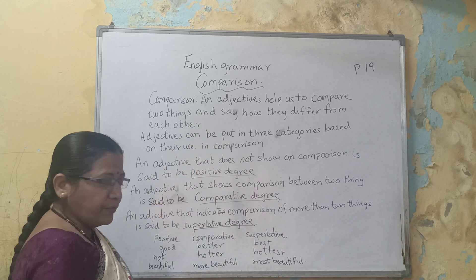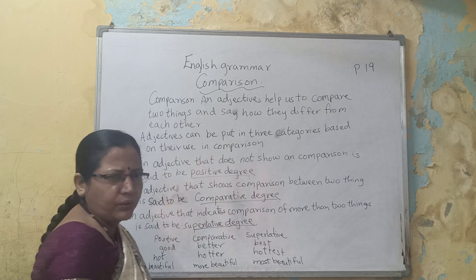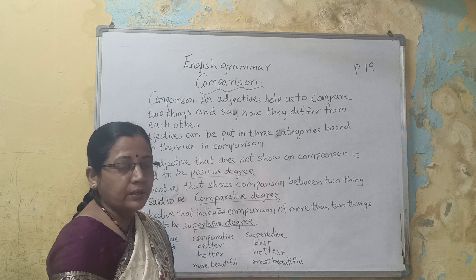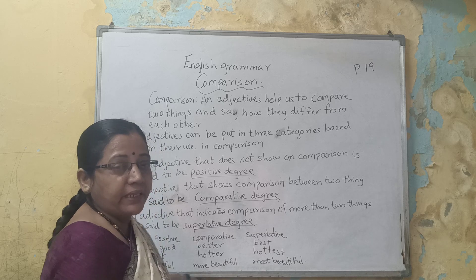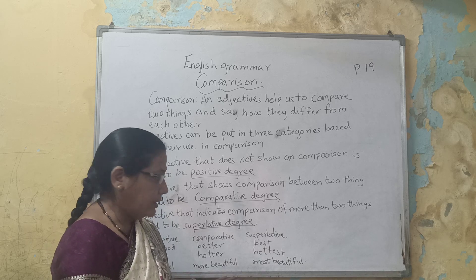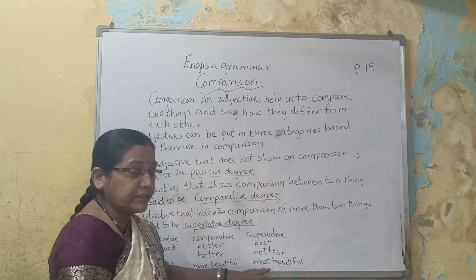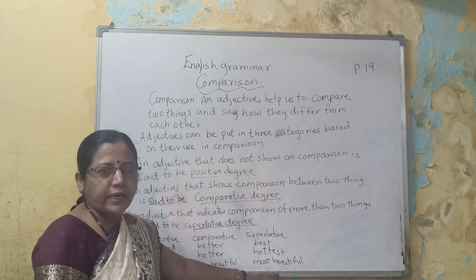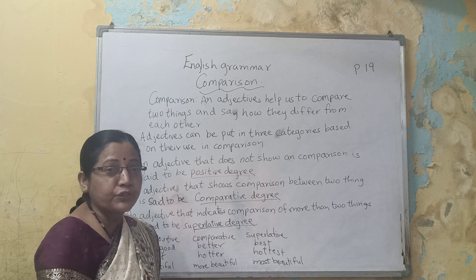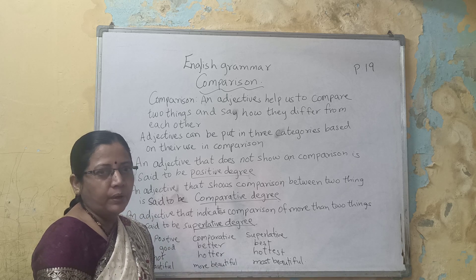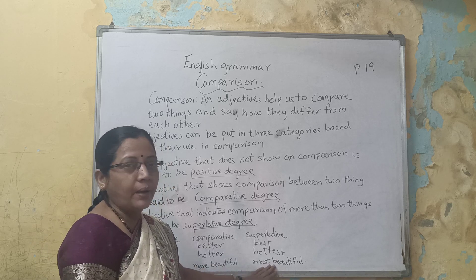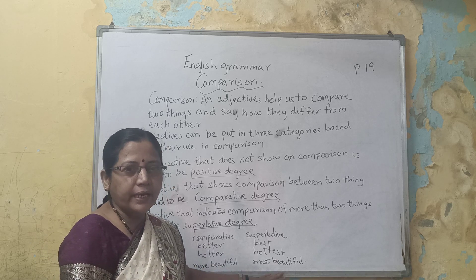Now, 'beautiful' — beautiful means sundar. More beautiful means usse bhi zyada sundar. And the most beautiful means sabse zyada sundar. Yeh bhi teen degrees mein aata hai: beautiful, more beautiful, most beautiful.